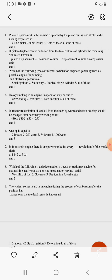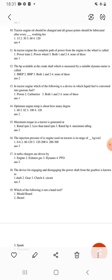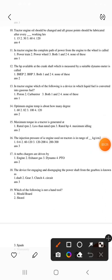Third option, detonation, is correct. Question 10: Tractor engine oil should be changed and all grease points should be lubricated after every 120 working hours. Fourth option will be correct. Question 11: In tractor engine, the complete path of power from the engine to wheel is called power train. B option will be correct.